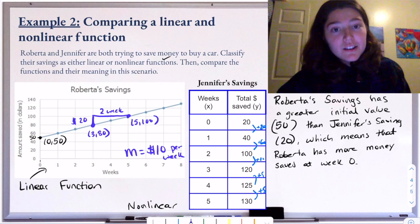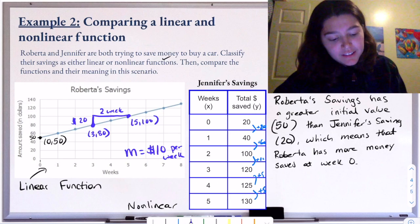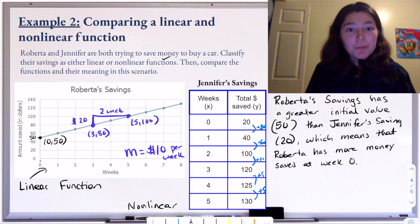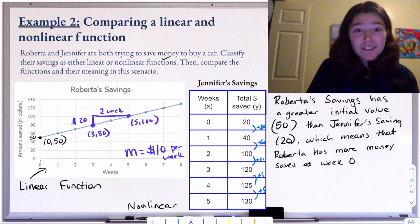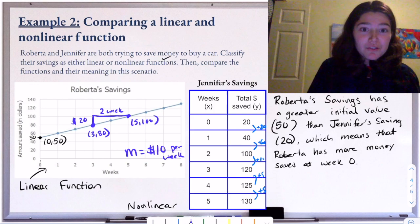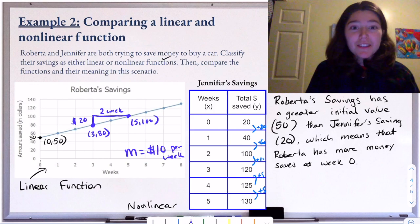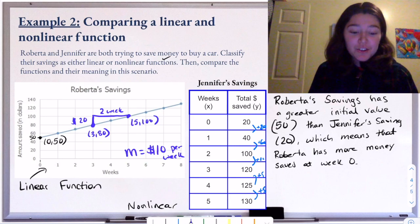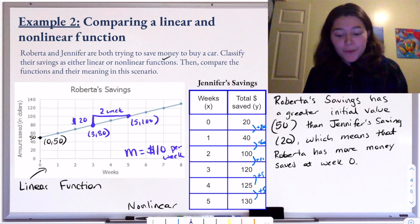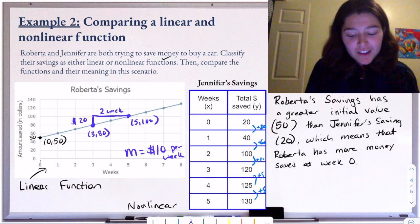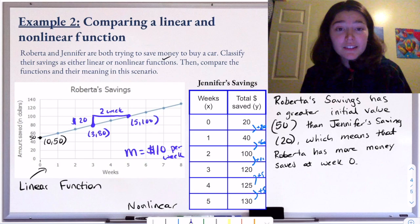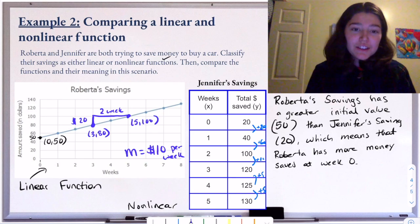Jennifer isn't saving at the same linear rate — sometimes it's $20, then $60, then $10, then $5. In the real world, there are people who save like Roberta, consistently putting $10 away each week, and people who save like Jennifer, where the amount varies because of dinner outings, gifts, gas bills, or extra cash one week. There's both a linear and nonlinear approach to saving money, and both happen and are totally fine. So to summarize: Roberta saves $10 per week, but Jennifer saves a different amount of money each week.